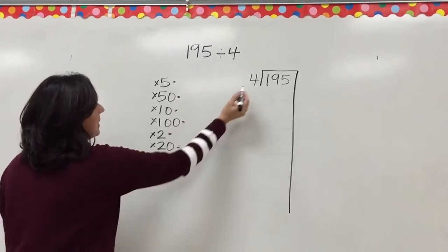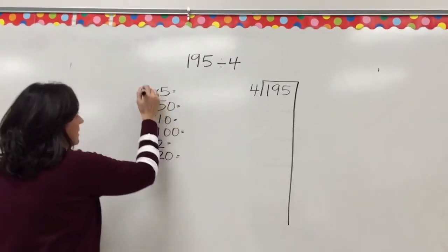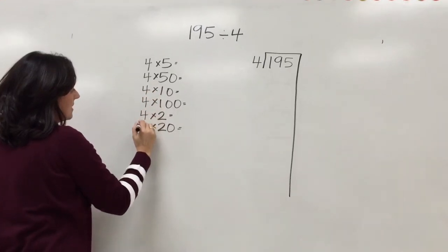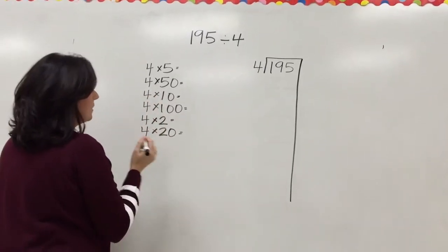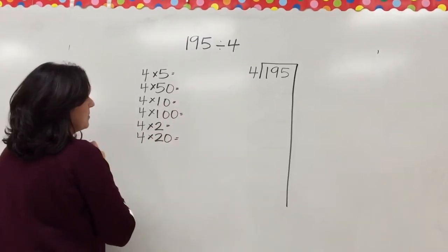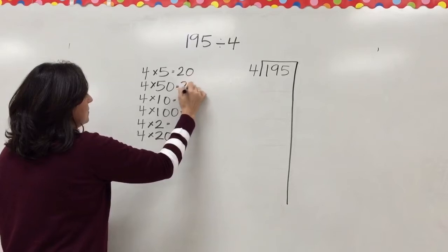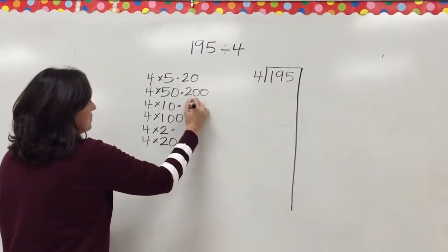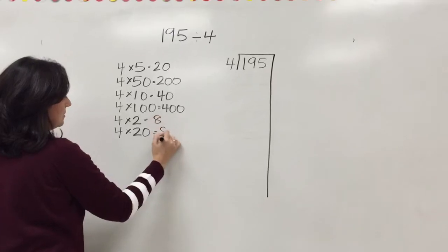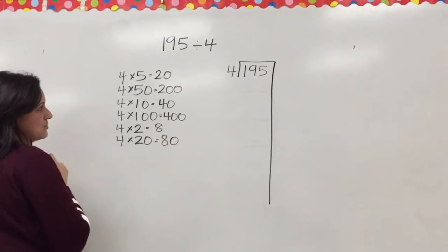We multiply each of these by whatever the divisor is. So in this case, it's 4. This benchmark list should only take a few seconds, but it will help us to complete the problem. So if you know 4 times 5, then you know 4 times 50. If you know 4 times 10, you know 4 times 100. If you know 4 times 2, you will know 4 times 20.